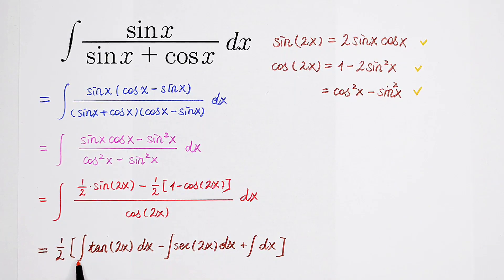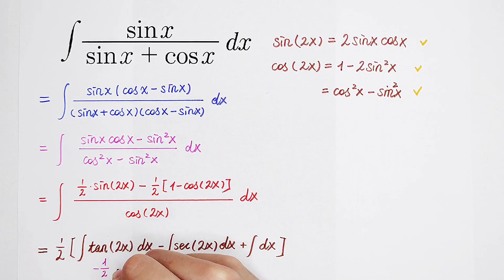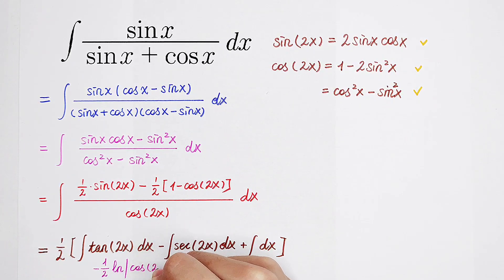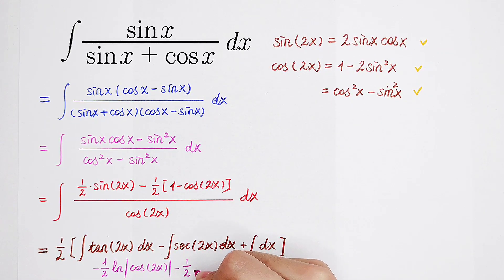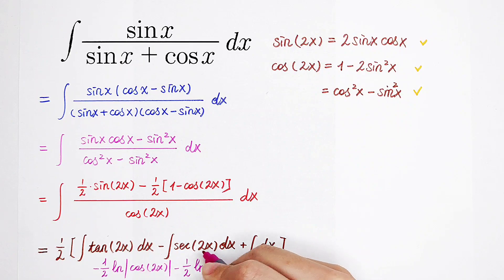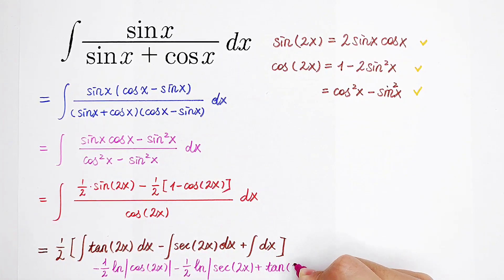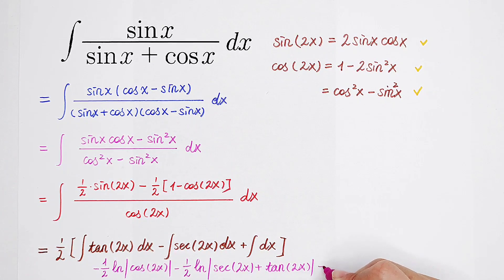Now we can solve each integral. The integral of tangent of 2x is negative 1 over 2 times the natural log of the absolute value of cosine of 2x. Then, because here is minus, it is minus a half times the natural log of the absolute value — and here 2x — so 2x. Then plus the integral of secant of 2x, which gives tangent of 2x. And this is 1, so it is just plus x. And don't forget to plus c.